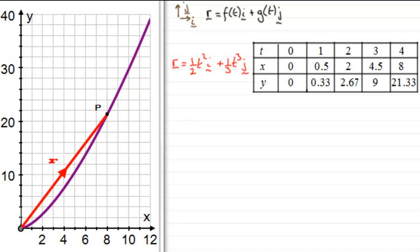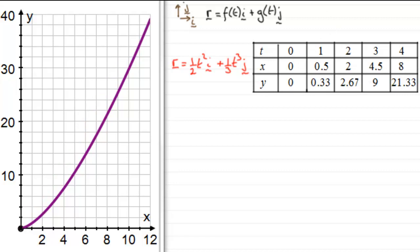At t equals 4, the particle is at 8i + 21.33j; at t equals 5 it would be just off the graph. Now I'd like to run the motion of particle P in real time. Let's return the particle to the origin where it is at t equals 0, then cycle through times from 0 up to 5. We'll repeat this several times so we can analyze the motion.